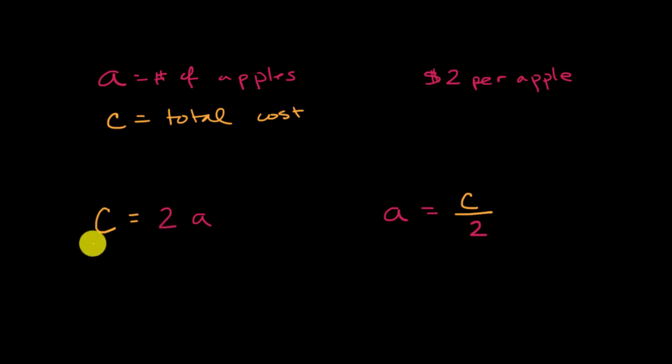For example, on the left-hand side here, it's really easy to try out different A's and then think about how that will affect the cost. And so when it's written like this, we would call the variable that it's easy to try out different values the independent variable.